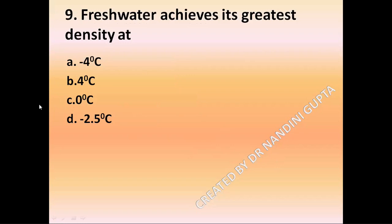Question 8: Fresh water has maximum density at — option A, 4 degrees centigrade; option B, 2 degrees centigrade; option C, 0 degrees centigrade; option D, minus 2.5 degrees centigrade. The correct answer is 4 degrees centigrade.